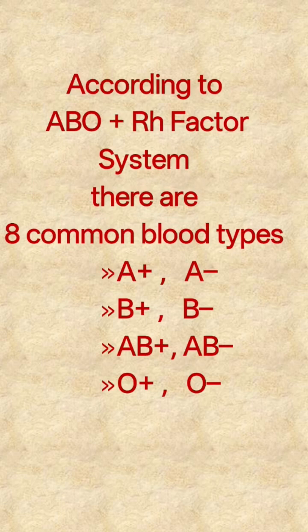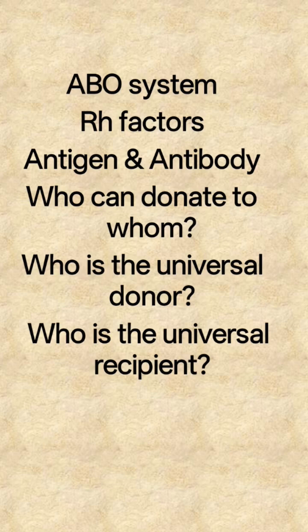According to the ABO and RH factor system, there are eight common blood types: A positive, A negative, B positive, B negative, AB positive, AB negative, O positive, and O negative. The ABO system involves RH factor antigens and antibodies.